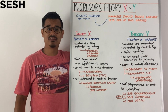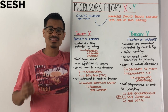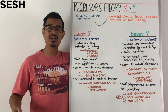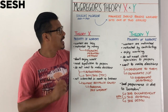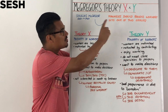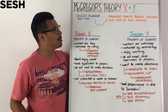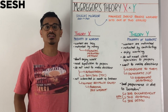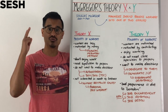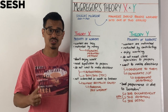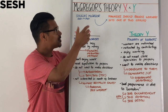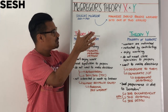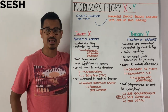Let's have a session on Theory X and Theory Y. In the 1950s and 1960s, Douglas MacGregor came up with the idea that managers should bundle workers into one of two groups. The majority of those workers, MacGregor said, should be Theory X.